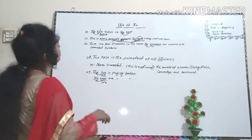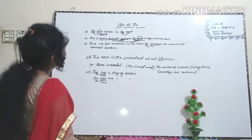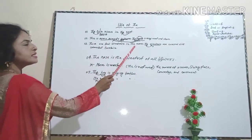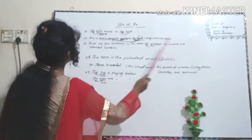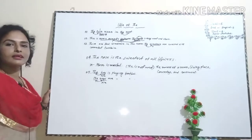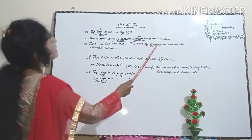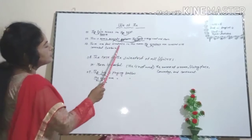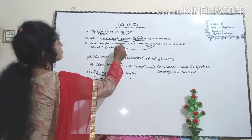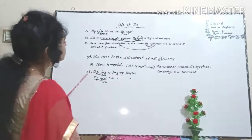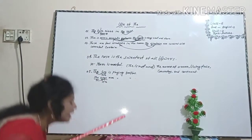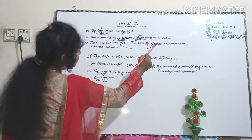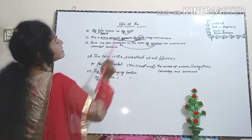Here, sentence number three: 'There are few windows in the room. The windows are covered with colorful cartoon.' Dear learners, the word 'windows' indicates those few windows. Here we use 'the windows' because it is definite. So, before definite nouns, we use 'the'.